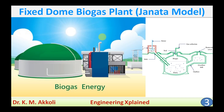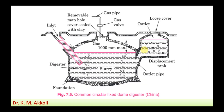There are two types of biogas plant popular in India. One is the KBIC model, that is the Khadi Village Industries Corporation model, and another one is the fixed dome biogas plant. In this session I am going to explain the working of the fixed dome biogas plant, and I will also compare it with the KBIC model.